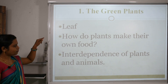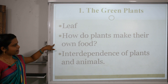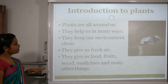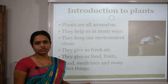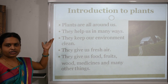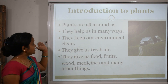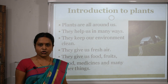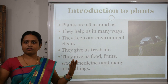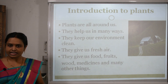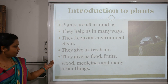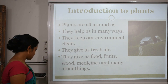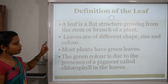In this lesson three topics are covered: Leaf, How do plants make their own food, and Interdependence of plants and animals. Before I start this lesson, let me introduce you to plants. Plants are all around us — near your house, near gardens, near roads. They help us in many ways. They keep our environment neat and clean, give us fresh air, food, fruits, wood, medicines, and many other things. Plants are very important to us.